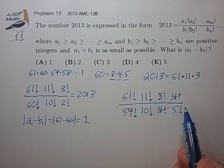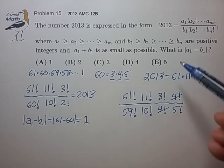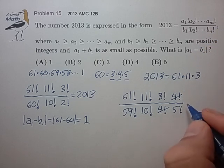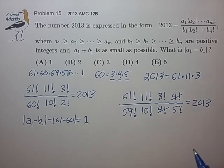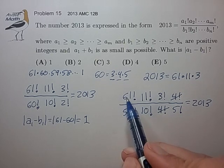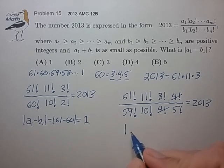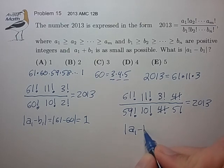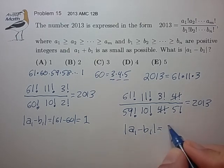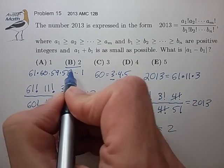The form of the numerator and the denominator match the desired form that we're looking for. This is equal to 2013. It looks like we've minimized A1 plus B1. And the absolute difference is equal to 2 for answer B.